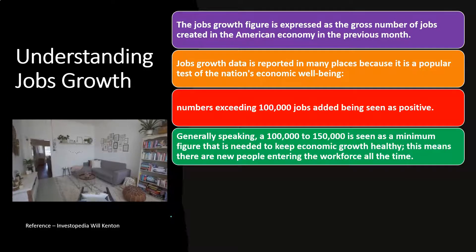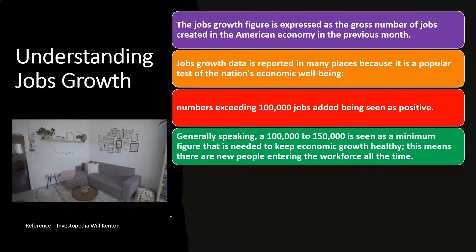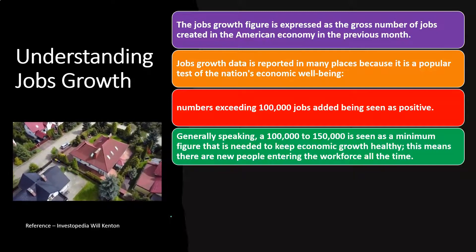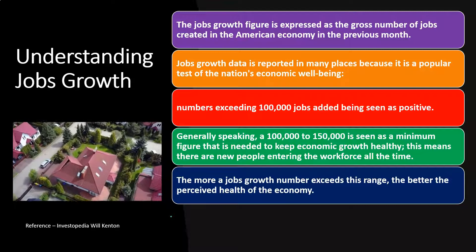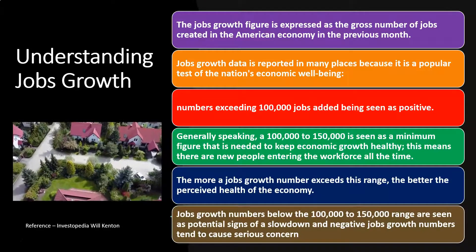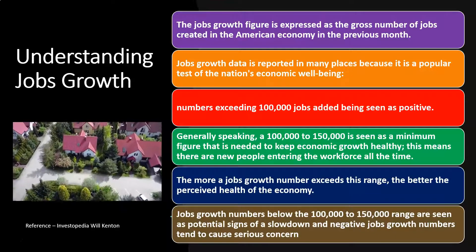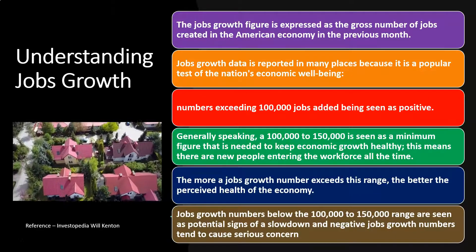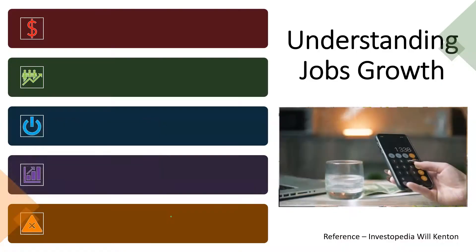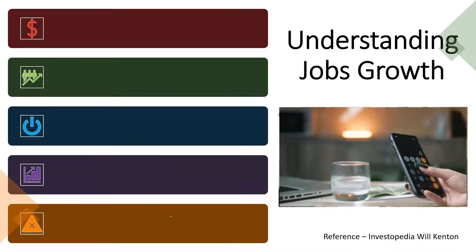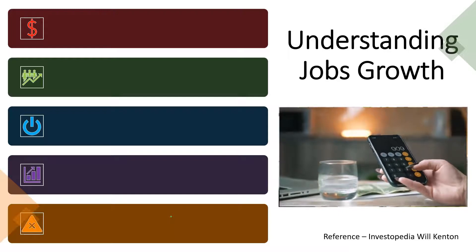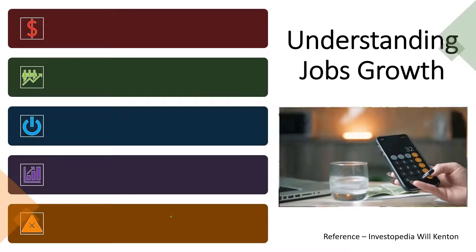Generally speaking, 100,000 to 150,000 jobs is seen as a minimum figure needed to keep economic growth healthy, as there are new people entering the workforce all the time. The more a jobs growth number exceeds this range, the better the perceived health of the economy. Jobs growth numbers below the 100,000 to 150,000 range are seen as potential signs of a slowdown, and negative jobs growth numbers tend to cause serious concerns. We can look at those trends on the national level and then compare them on the regional level to see if the regional level is doing better or worse.